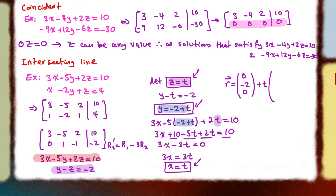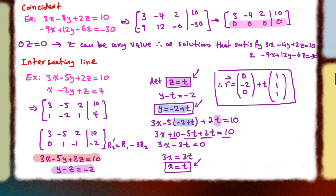We can convert this into vector form and Cartesian form if asked. The vector form is the point (0, −2, 0) plus parameter t multiplied by direction vector (1, 1, 1).